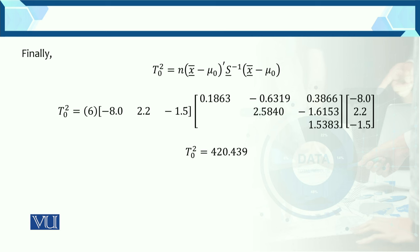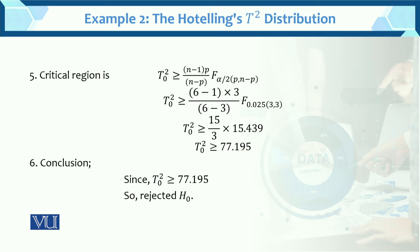Now all these values are found. After putting them and simplifying all the factors, the T-square value is determined. T-square equals 420.439 — this is the calculated value.